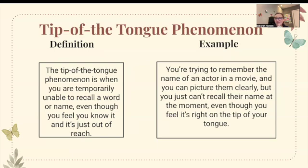The tip of the tongue phenomenon is when you are temporarily unable to recall a word or name, even though you feel you know it and it's just out of reach — hence the tip of the tongue. For example, you're trying to remember the name of an actor in a movie, you can picture them clearly, but you just can't recall their name at that moment. Happens all the time.